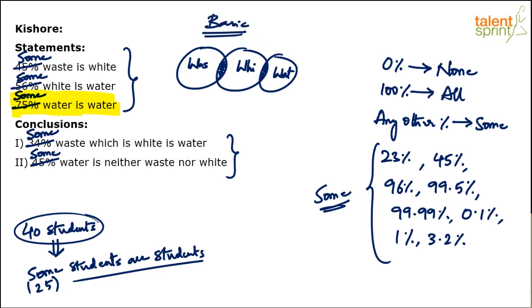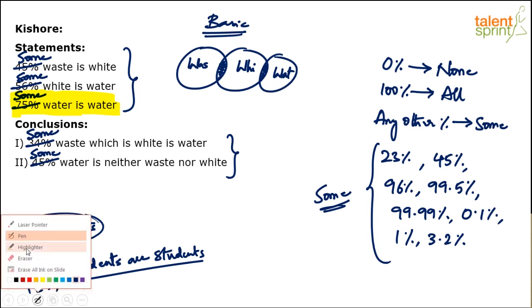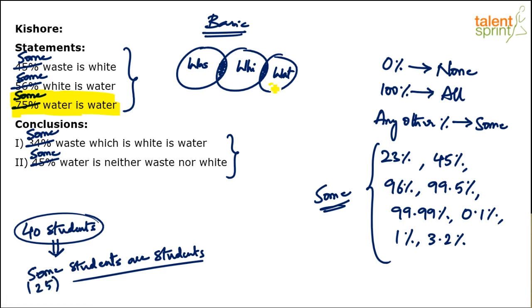The last statement says 'some water is water'. I can choose some portion of this water and say yes, this water is water — the yellow shaded region here. I can choose some portion of this water and say this is water. Some of this water is water — nothing wrong in it.